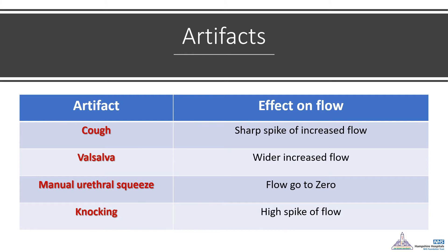Analysis of the curve should be taken with caution due to the presence of multiple artifacts. For example, any cough during the flow may give a sharp spike. Straining or Valsalva maneuver will appear in the flow as a wider increased flow. Patients should be asked not to squeeze on the urethra to avoid interruption of the flow, and should be careful not to knock the funnel with their legs as this may give a spike during the flow.